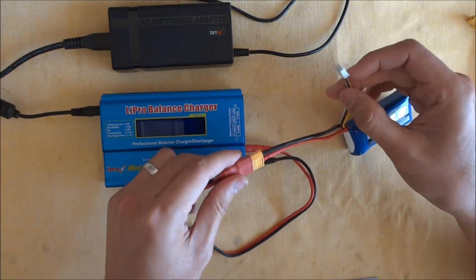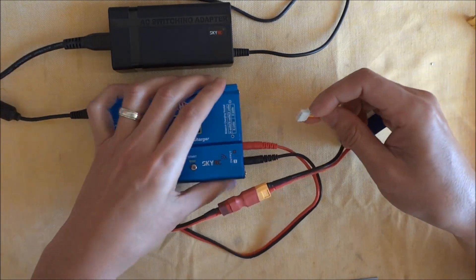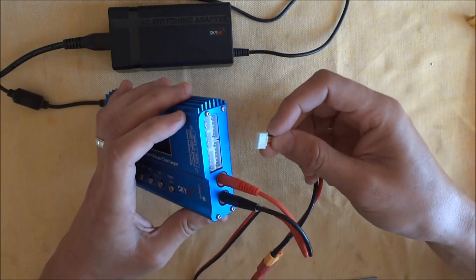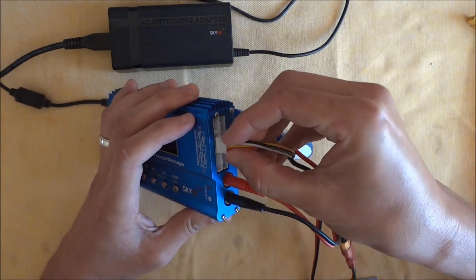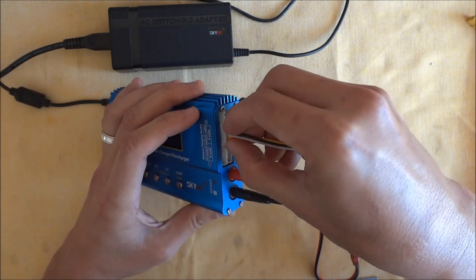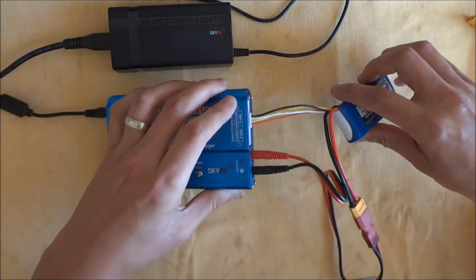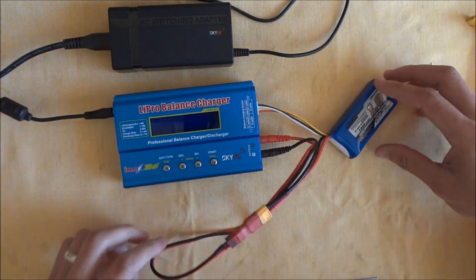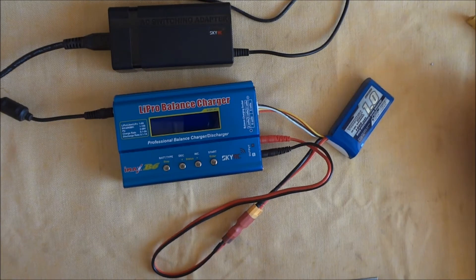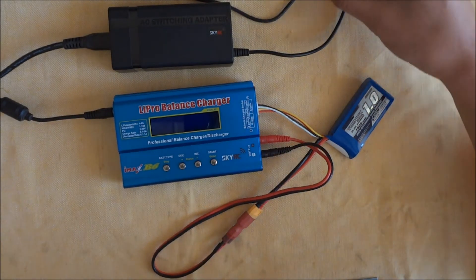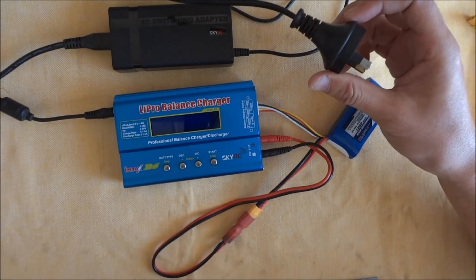So that's our charge discharge lead. And then we've got our balance lead, which plugs in here. So you plug it in the appropriate slot that will fit. So that's our connection all set up there. You can now plug the power supply into the socket and turn it on.